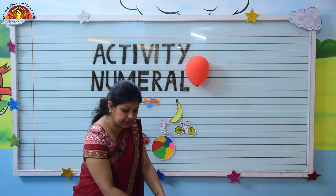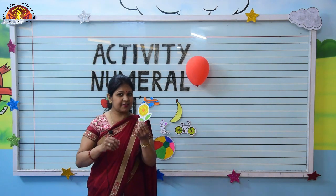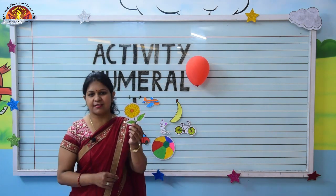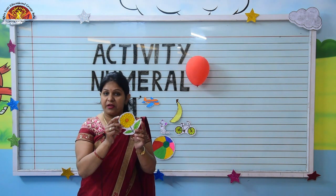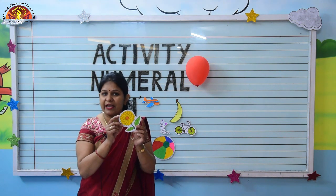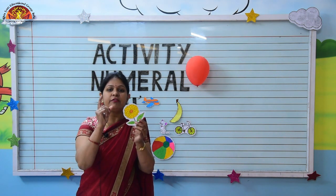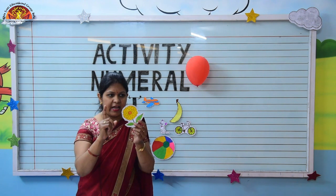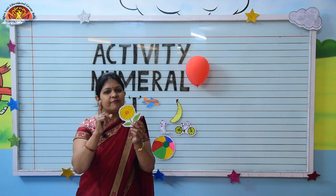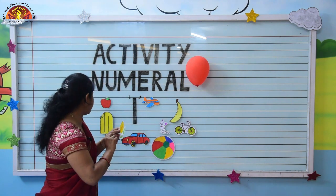Now, what is the next? This is a flower. How many flowers do I have? I have one flower. Very good.